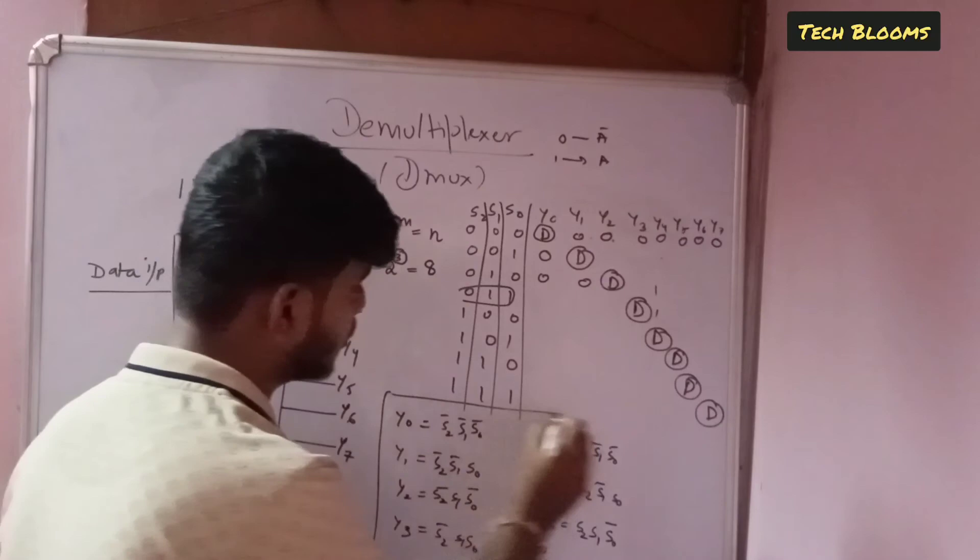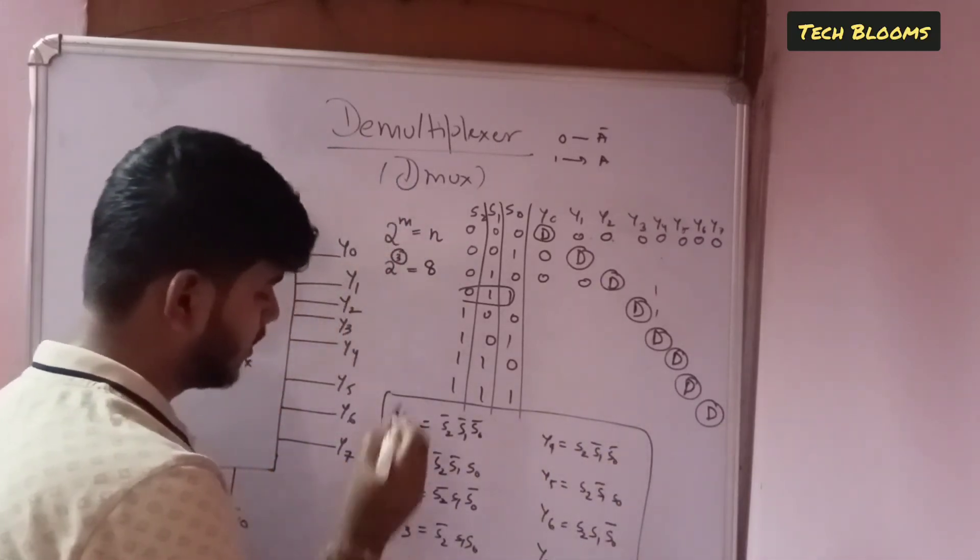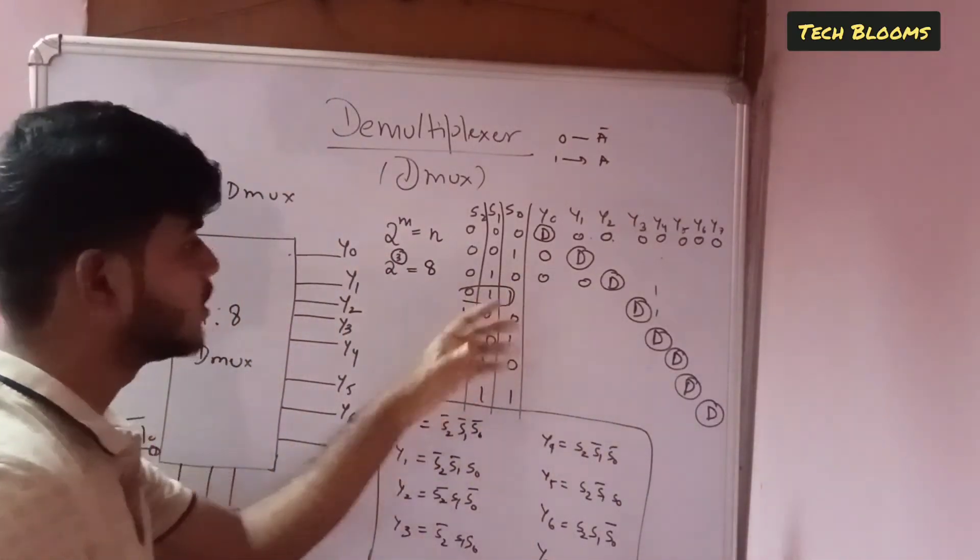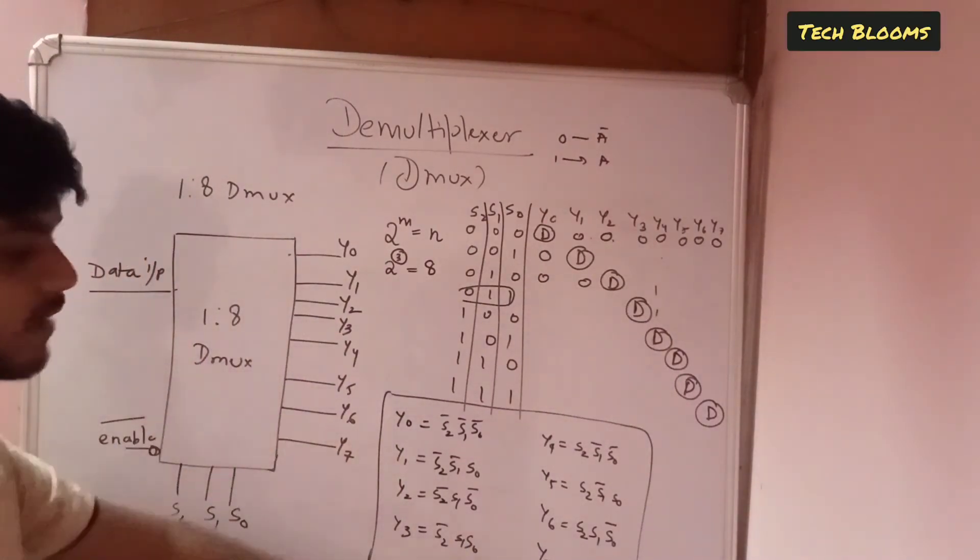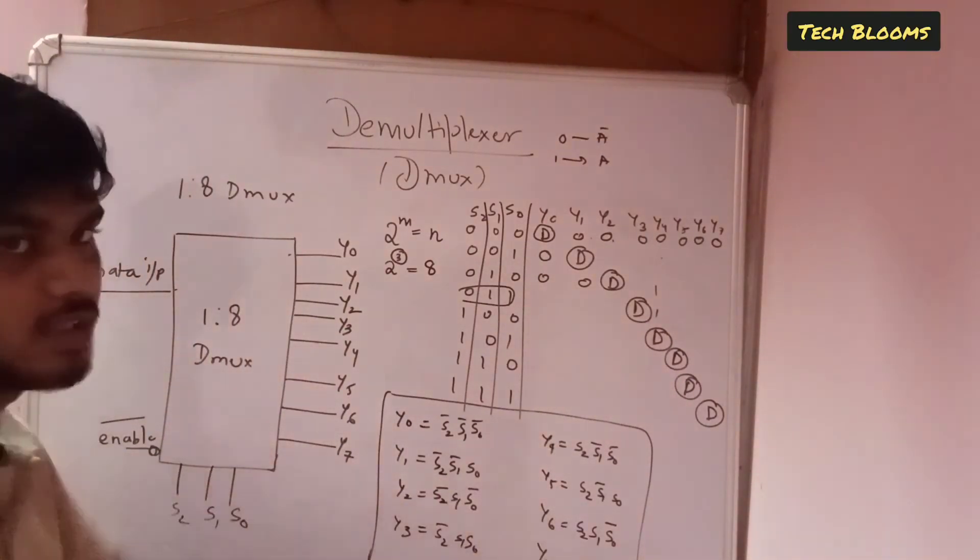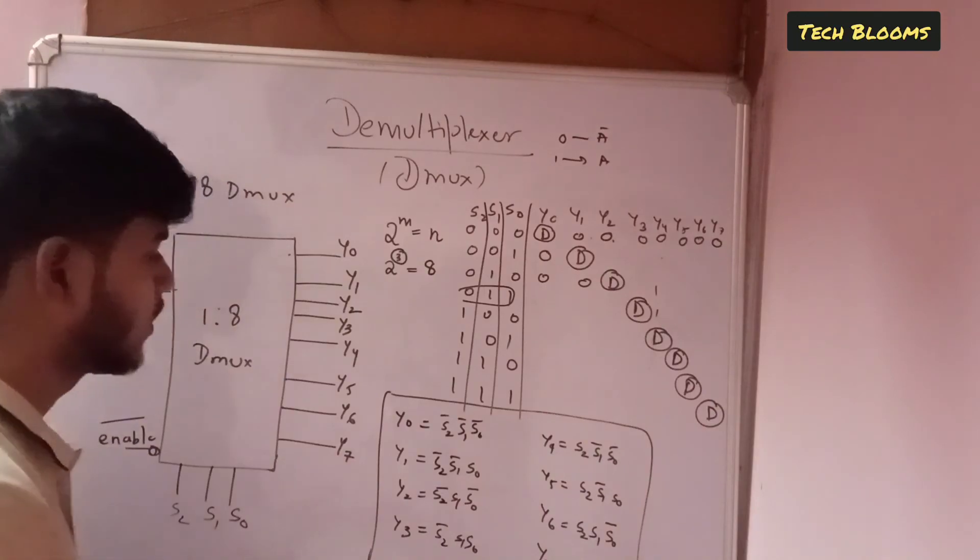So here are the equations for your output lines derived from the truth table. So this is how 1 is to 8 dmux is derived. Now from this we can construct the logic diagram. So thank you.